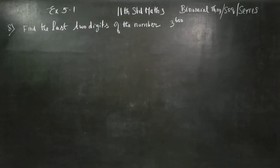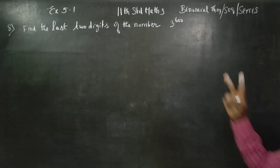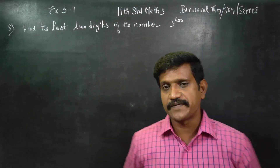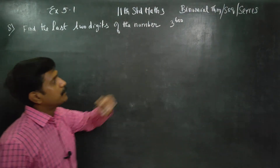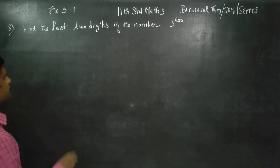Dear 11th standard students, I am Mitru Karanagaran. In exercise number 5.1, sum number 8: find the last two digits of the number 3 power 600.